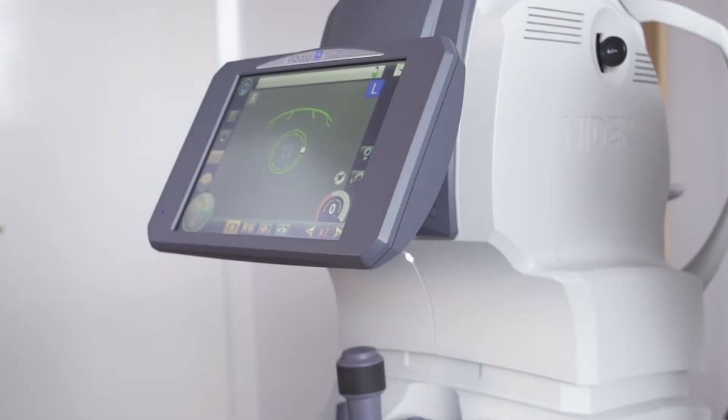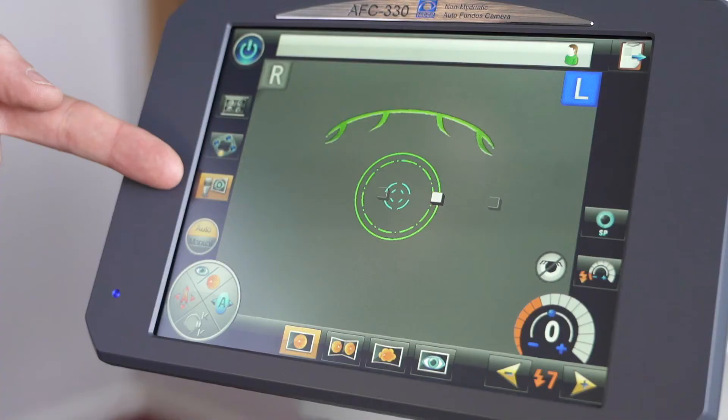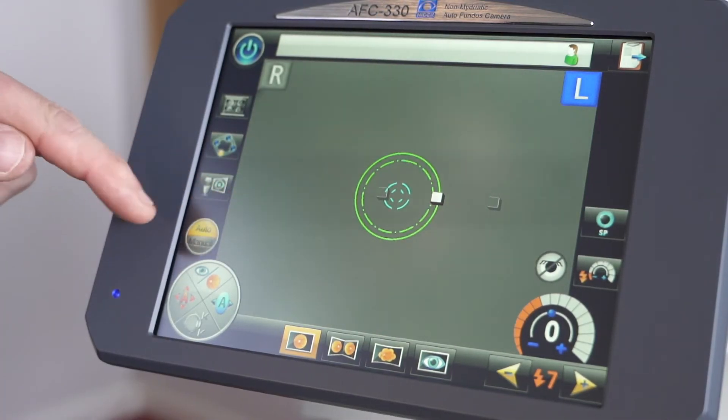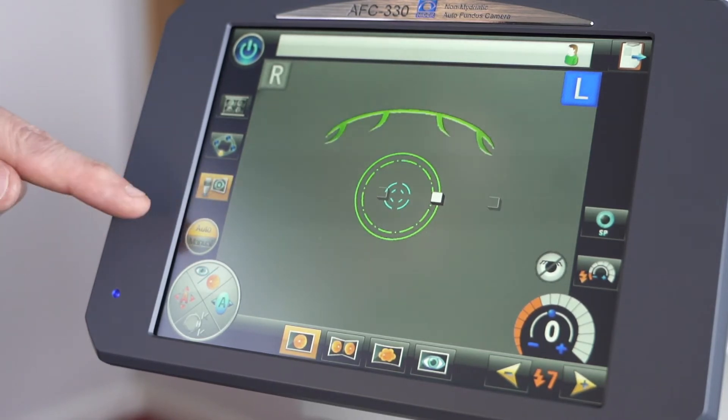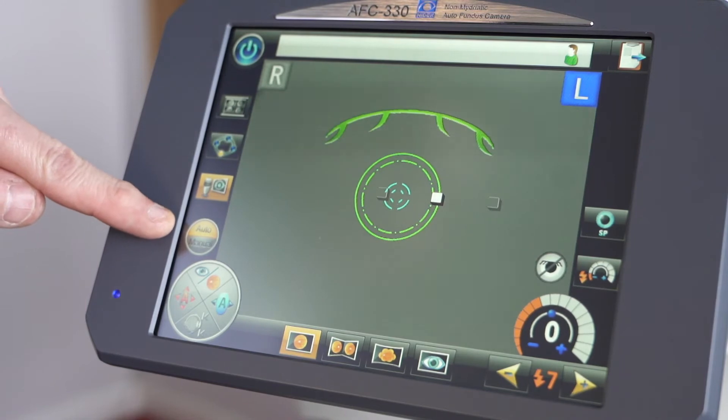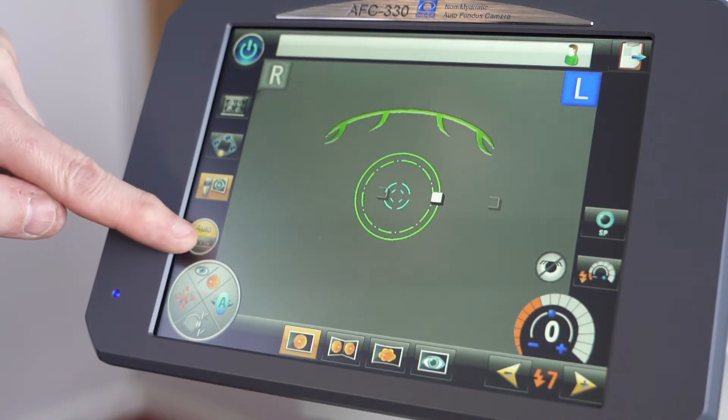As you see, the screen at the moment is the main default start position for the AFC330. To run through the icons, here we have the off switch which is used to power it down once you are finished with the device. This icon here turns on and off the auto capture option.